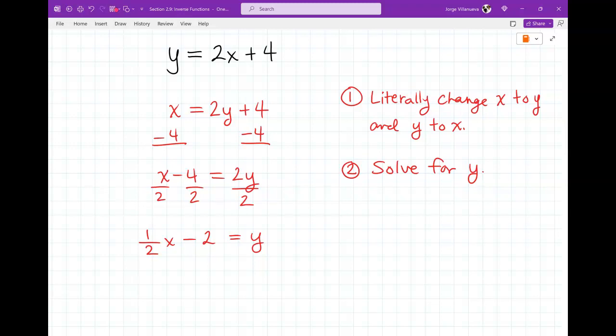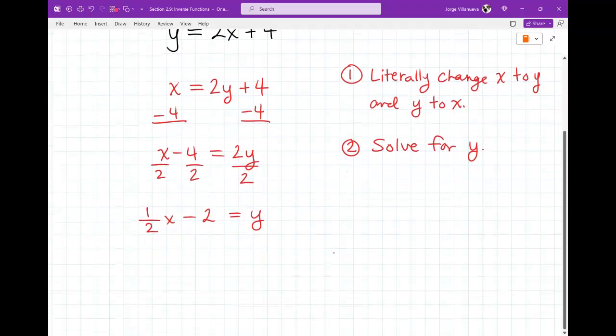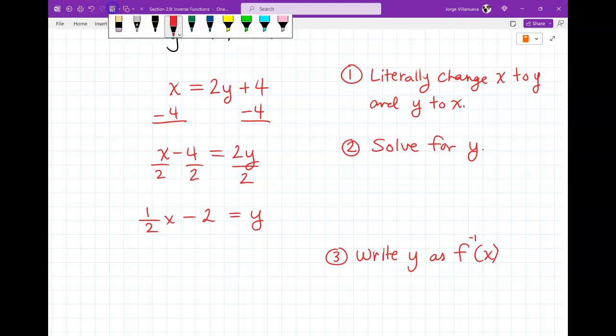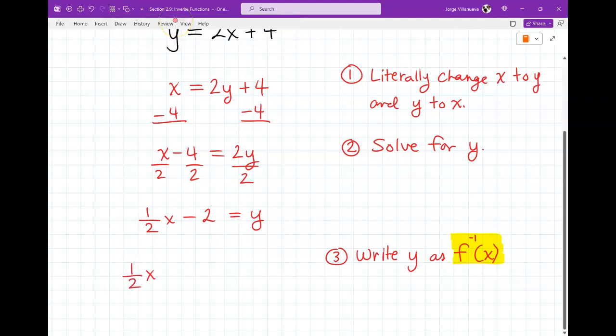Third step, not a hard step, but third step says, number 3, write y as f inverse of x. So that's the notation, this is your inverse notation right here. So you're going to change the letter y into f inverse of x. So here we go, 1/2 x minus 2 equals f inverse of x, and I'm done. That's your inverse function.